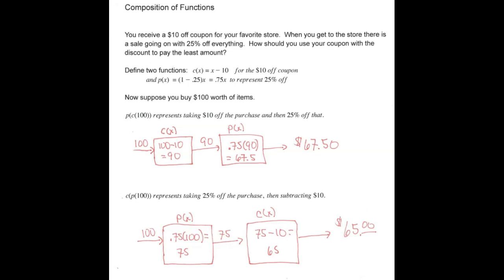We can think of these two off amounts as two functions. We'll let the first one, c of x, equals x minus 10. This represents taking $10 off your final amount. So x is the amount you're going to spend.